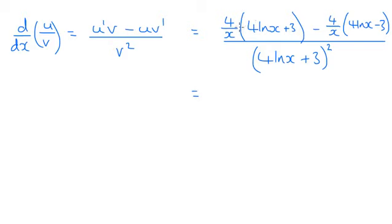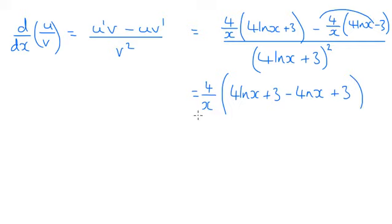Now the first thing I can do is take this 4 over x. There's a 4 over x in both things we've got here. So I can take that out of everything, which will give me 4 ln x plus 3 take away 4 ln x and a plus 3. We've got a minus and a minus there. And that's going to be divided by 4 ln x plus 3 squared.